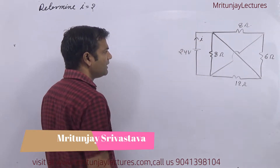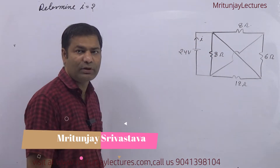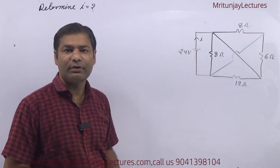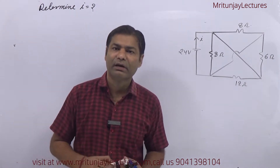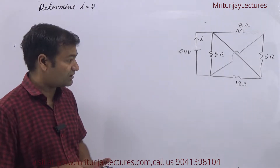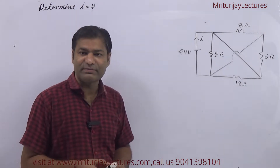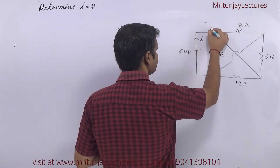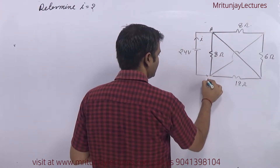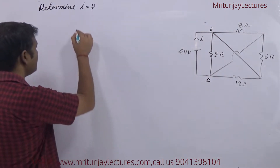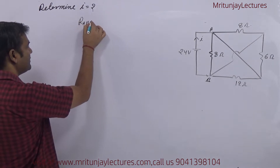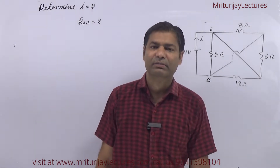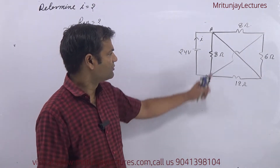Our problem is to determine current and equivalent resistance corresponding to a 24-volt battery. First of all, what is our task? Determine the equivalent resistance between these two terminals — suppose that is point A and that is point B. So first of all, how can we determine equivalent resistance between A and B?